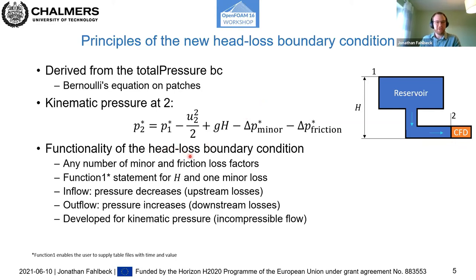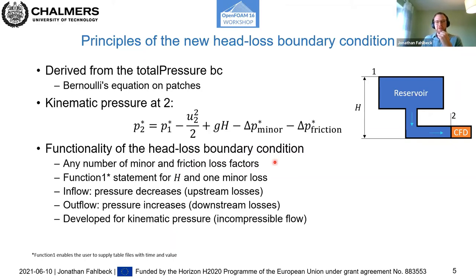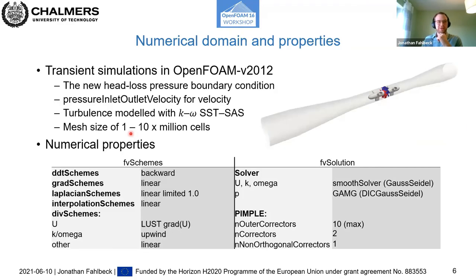The developed boundary condition can take any number of minor and friction loss factors in series — as many instruments, valves, or bends as needed, and any pipe length. We also added a function1 statement for the head and one minor loss factor so that a table file can be supplied to simulate transient operating conditions, for example closing a valve or changing the head of the station.